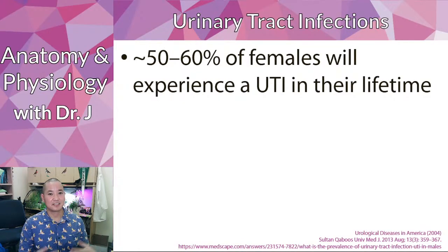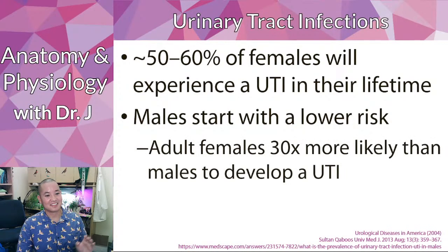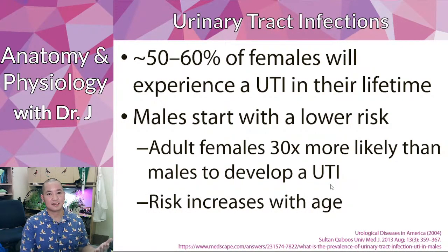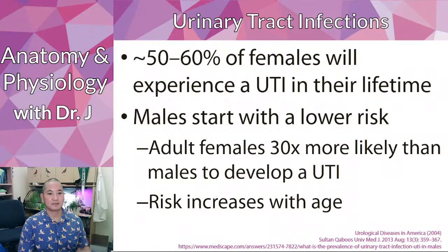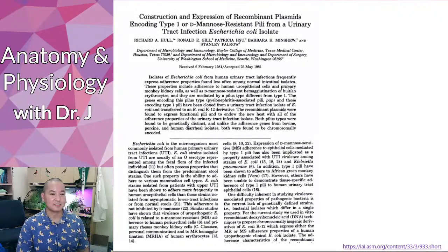Urinary tract infections are very common — the lifetime risk for females is 50 to 60 percent. Getting a UTI doesn't mean you have poor hygiene; it's quite common. Males start with lower risk, with adult females about 30 percent more likely to develop UTIs, but as males age they catch up because muscle tone and urethral sphincter control decrease with age.